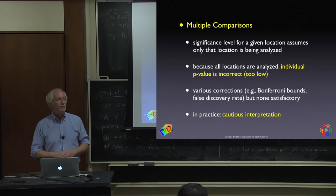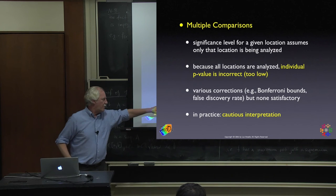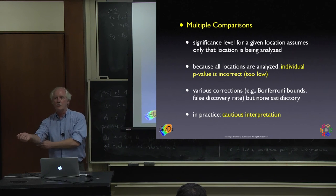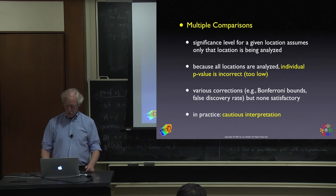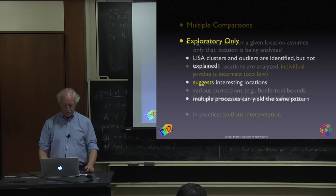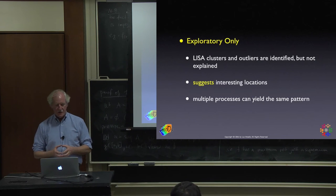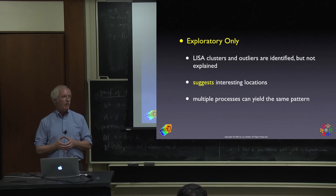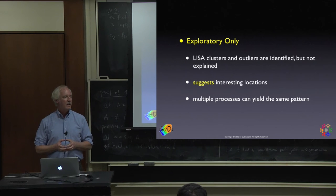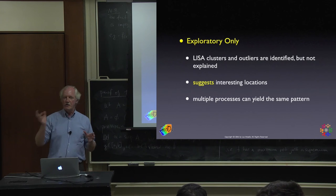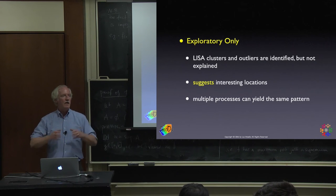If you're at the edge, that p-value is probably misleading and suggests a cluster that is not truly significant at 0.05 — maybe only at 0.10 or 0.15. Depending on what you're doing, you might want to take that into account. The bottom line: cautious interpretation. Don't get too excited.